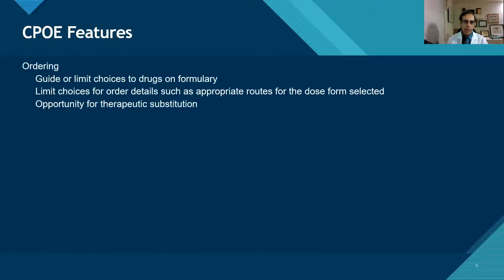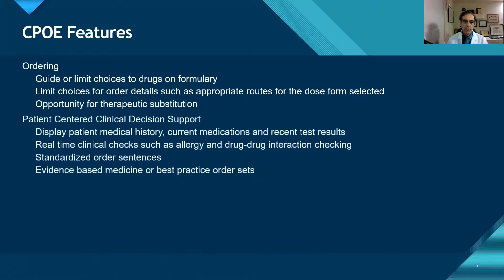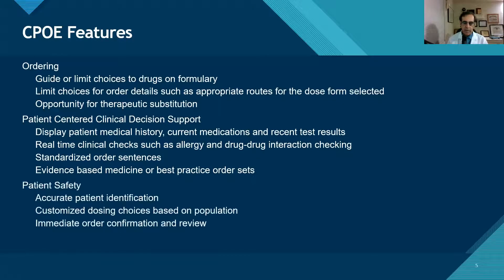With ordering, we can dive a little deeper and talk about limiting choices that we present to the provider, guiding them with the proper prescribing of medications. Then we can apply clinical decision support — checking for allergies and interactions and doing dosage range checking and other great clinical decision support. There's also patient safety: we're doing the five rights, identifying the patient before we prescribe the right drug to the right patient.